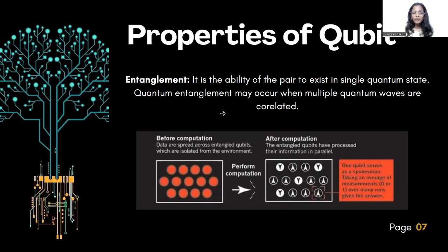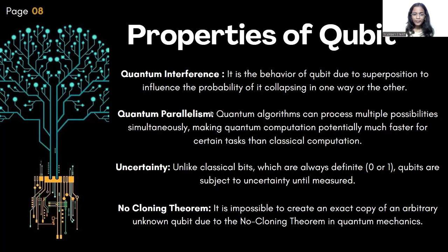Entanglement: it is the ability of a pair to exist in a single quantum state. Quantum entanglement may occur when multiple quantum waves are correlated. Before computation, data are spread across entangled qubits which are isolated from the environment. After computation, the entangled qubits have processed their information in parallel. Quantum interference: it is the behavior of a qubit, due to superposition, to influence the probability of its collapsing one way or the other.